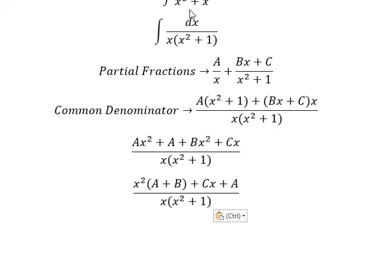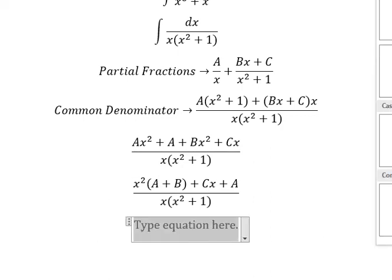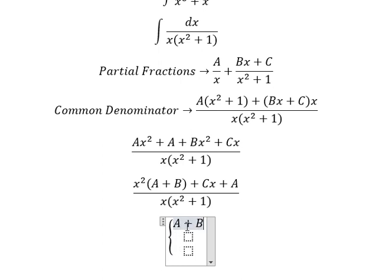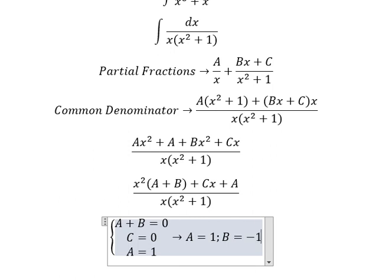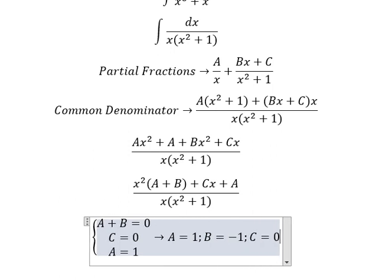So we see that we have the x term, that means A equals number one. We don't have x squared, that means A plus B equals number zero. C equals number zero, so we have the system of equations. A plus B equals number zero, C equals number zero, A equals number one. So in this situation, A equals number one, B equals negative number one, C equals number zero.